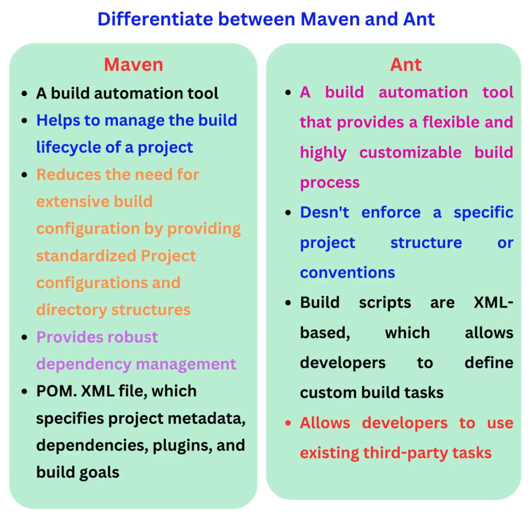Ant is a build automation tool that provides a flexible and highly customizable build process. It doesn't enforce a specific project structure or conventions. Build scripts are XML-based, which allows developers to define custom build tasks.